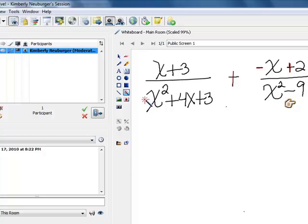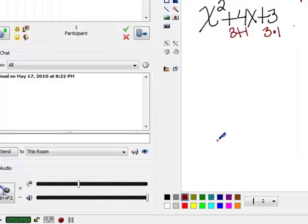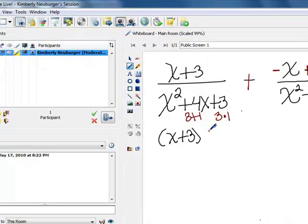So let's go ahead and factor this one, which has three terms with a leading coefficient here of one. So we need factors of three that add up to four. And I notice that three times one is three, and three plus one is four. So the denominator here is going to factor into x plus three times x plus one.